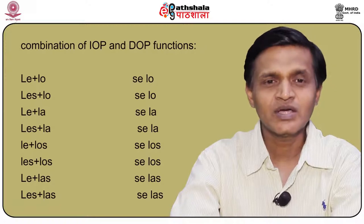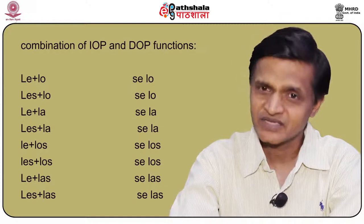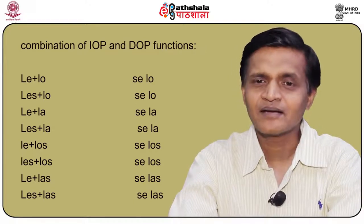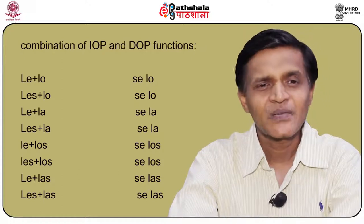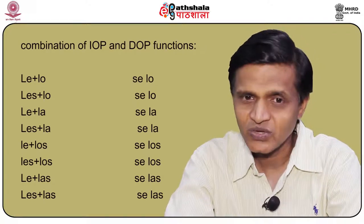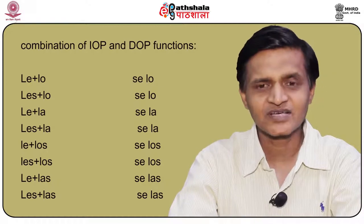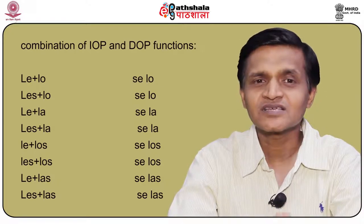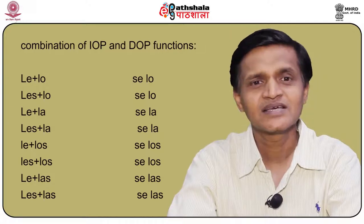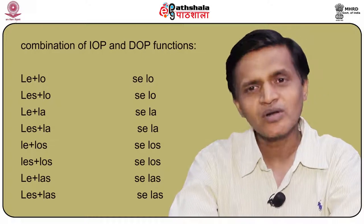As a rule, when le and lo come together, it becomes se lo. When les and lo come together, it also becomes se lo. When les and las come together, it becomes se las. The rule is that les lo, les la cannot exist — it always has to be se lo, se la, se los, or se las.